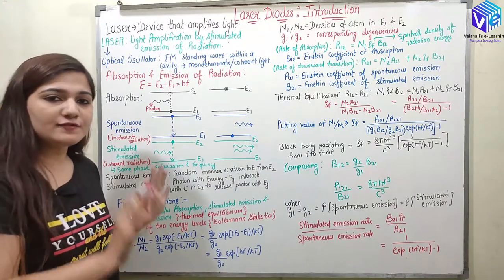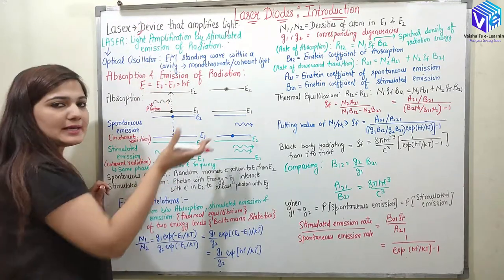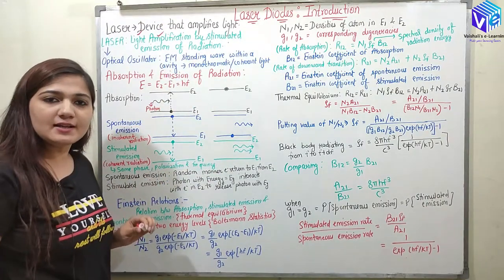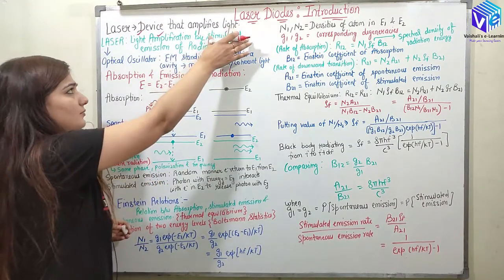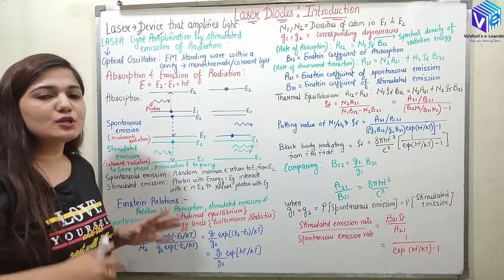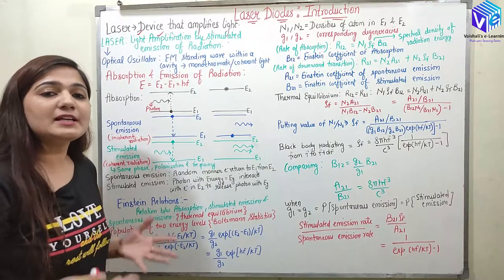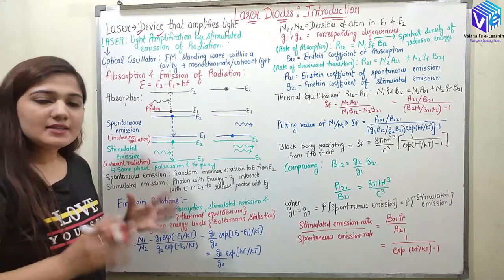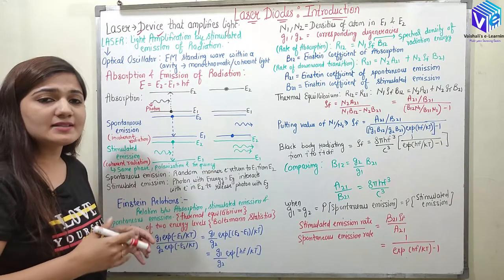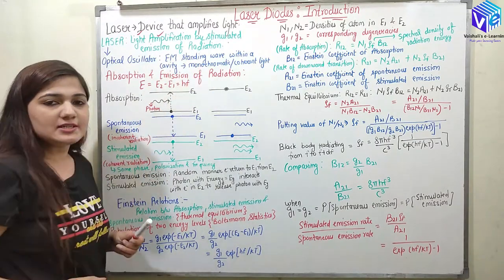We must understand all of the terms. The first term is light — we all know light, and we are working with light in optical communication. We are having the amplification of light with the help of lasers. Now we are going to talk about stimulated emission. We are going to understand it in detail. Laser is an optical oscillator, and in the stimulated emission, the laser acts as an optical oscillator. It will have a standing EM wave within a cavity.